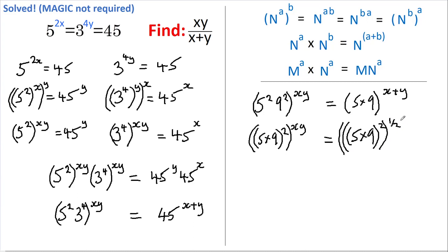And this is still to the power of x plus y. This additional squaring and square root has no overall effect. So why have I done all this? Well, I now have a base of 5 times 9 squared on this side, and 5 times 9 squared on this side.